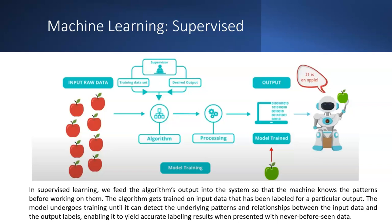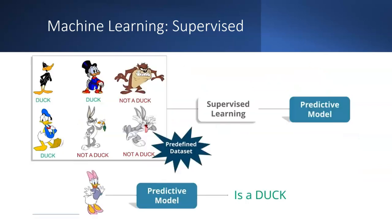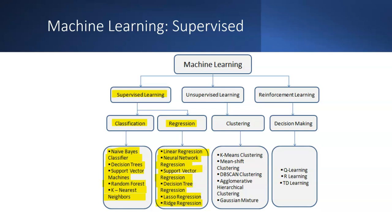In supervised learning, inputs and outputs are clearly defined — like decision-making algorithms. For example, you train a model to detect whether an image is a duck or not; next time you feed a new example, the algorithm can detect it. Key supervised learning algorithms include decision trees, support vector machines (SVM), random forest, K-nearest neighbors, linear regression, neural networks, Lasso regression, and Ridge regression. Unsupervised algorithms include K-means clustering, DBSCAN, hierarchical clustering, and Gaussian mixture models. Reinforcement learning algorithms include Q-learning, R-learning, and TD-learning.